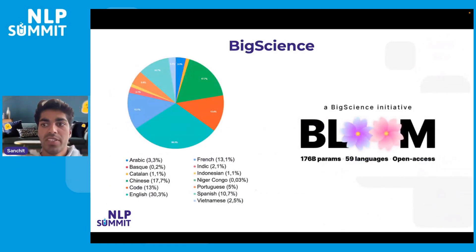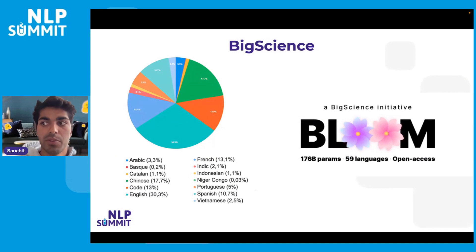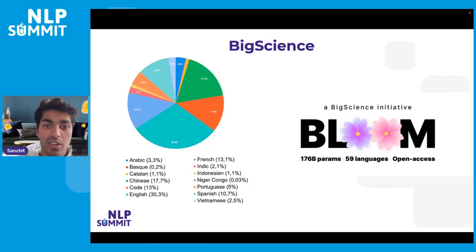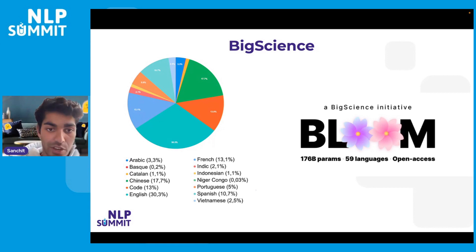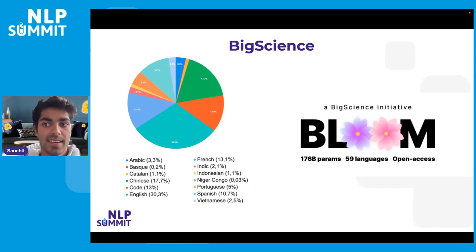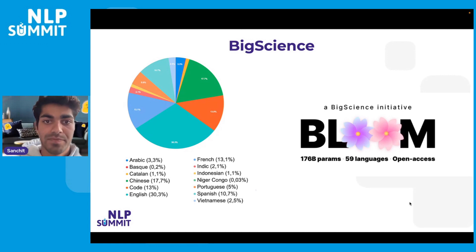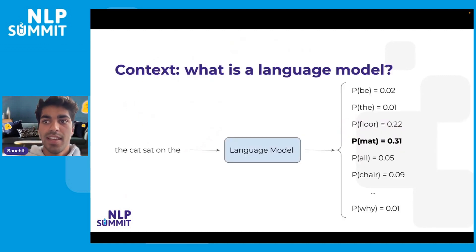The global community involved in Big Science contributed their own languages and data to the text corpus. For that reason, we see the inclusion of 46 different languages and code into this multilingual corpus, including several languages from low-resource settings. This corpus was then used to train the BLOOM model, which we'll now get into.